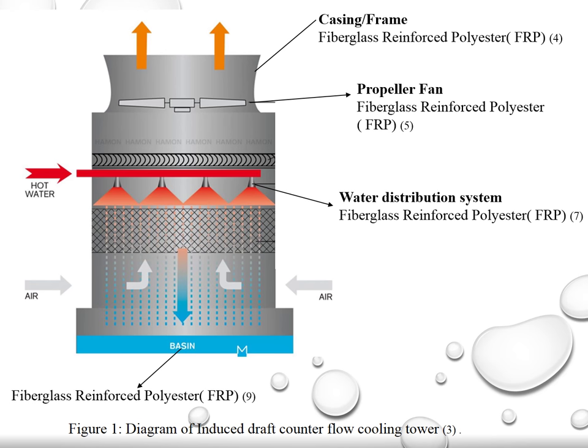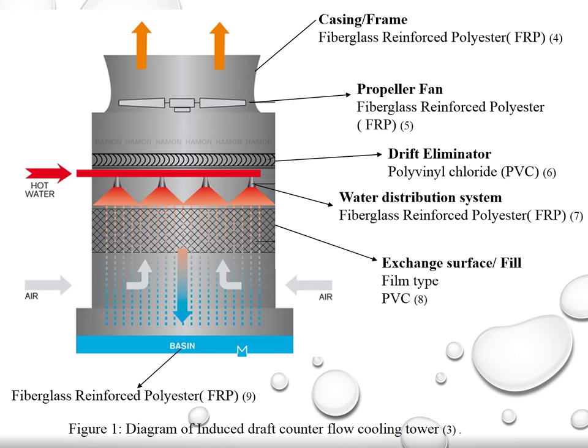Polyvinyl chloride or PVC is used for the drift eliminator, as it has high resistance towards weather, chemical, and corrosion. For the fill, film type PVC is used as it lowers the pumping head and horsepower cost for counter flow.